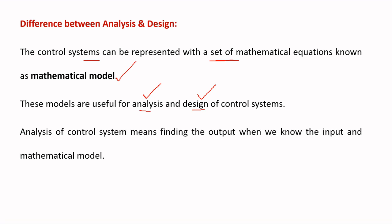Coming to analysis of a control system: analysis is finding the output when we know the input and the mathematical model of a system. That is nothing but analysis — finding the output of a system when you know the input and the mathematical model.